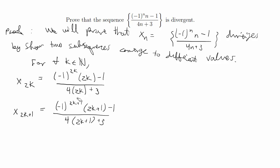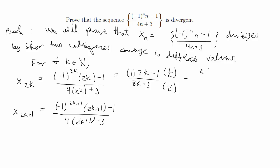Plugging in 2k plus one gives us negative one to the 2k plus one times 2k plus one minus one over four times 2k plus one plus three. Now we need to simplify to be able to take a limit. For x of 2k, negative one to the 2k is always one, so that simplifies to two k minus one over eight k plus three. We still have k in the numerator and denominator, so we multiply by one over k on top and bottom, giving us two minus one over k, over eight plus three over k.